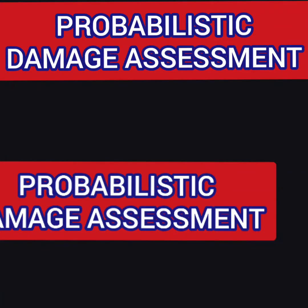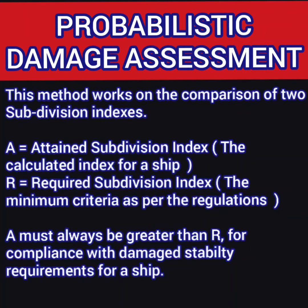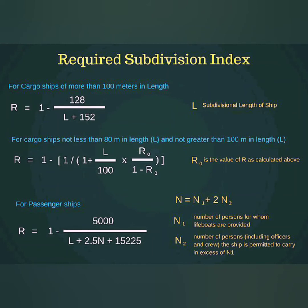The next method is called probabilistic damage assessment. In this method there is a subdivision index — an attained subdivision index calculated for a particular ship, and a required subdivision index which comes from the regulations. The attained value must be greater than the required subdivision index. To get the required subdivision index, there is a formula: for cargo ships more than 100 meters in length, for those between 80 and 100 meters, and a separate figure for passenger ships. Knowing the ship type and length gives you your required value R.